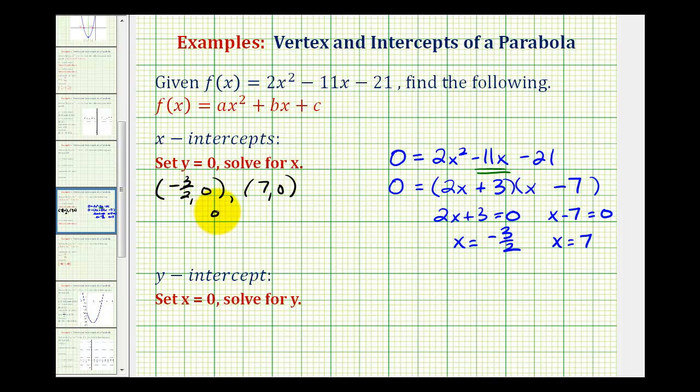We could also say the x-intercepts equal negative 3 halves and 7. What we don't want to do though is give the x-intercepts as x equals negative 3 halves and x equals 7, because technically those would be equations of vertical lines.